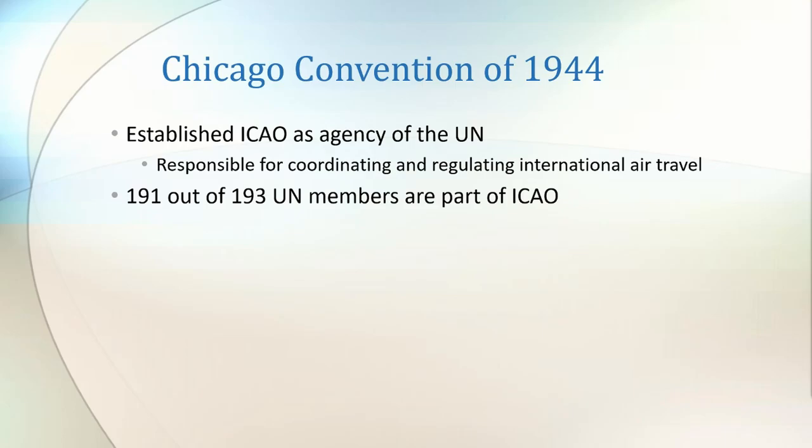On the 7th of December 1944, the Convention on International Civil Aviation, which later became known as the Chicago Convention, was held with at least 52 nations being represented. This Convention established the International Civil Aviation Organization as a specialised agency of the UN charged with coordinating and regulating international air travel.